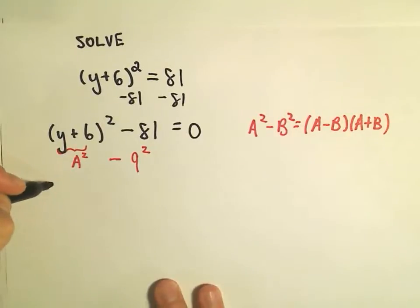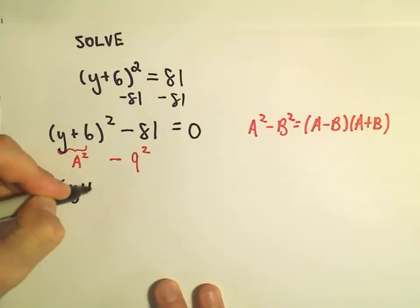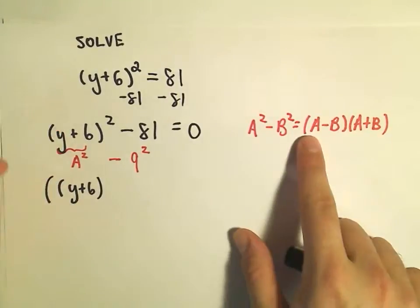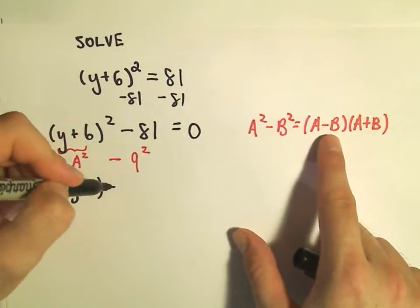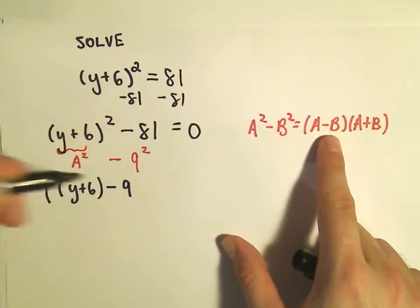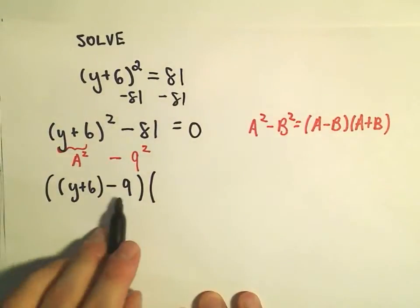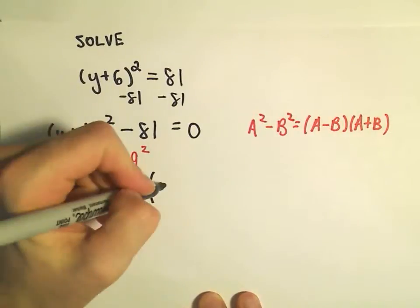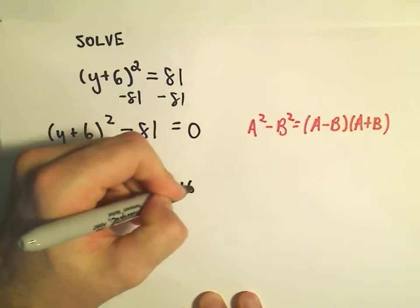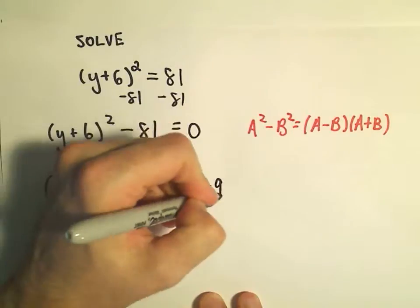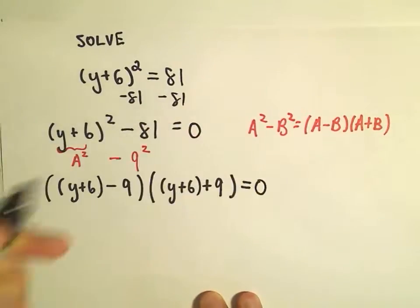So my a is the y plus 6. So you get y plus 6 minus b, and the number being squared is 9. And then we multiply that by basically the exact same thing, but we just put a plus sign in the middle. So y plus 6 plus 9 equals 0.